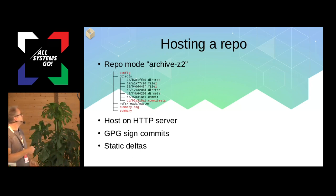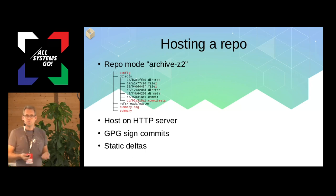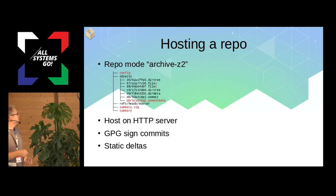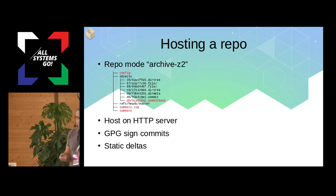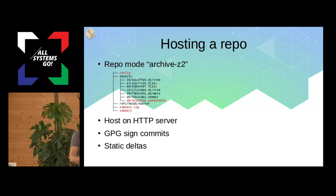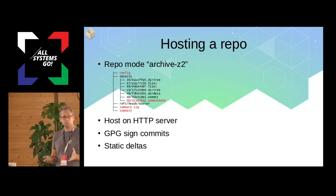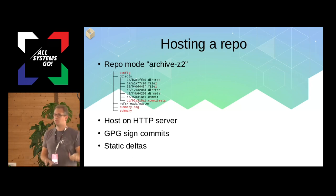There are GPG signatures in the commit metadata file — you can add a signature of the commit, and you can sign the summary, protecting against man-in-the-middle attacks or downgrades. There's also an optional static deltas directory where we store binary diffs between specific versions. If you're going from the second-to-last to the current version, there might be a specific delta file you can download for even better download performance. If a file changed by just one byte, you can get a really small delta.